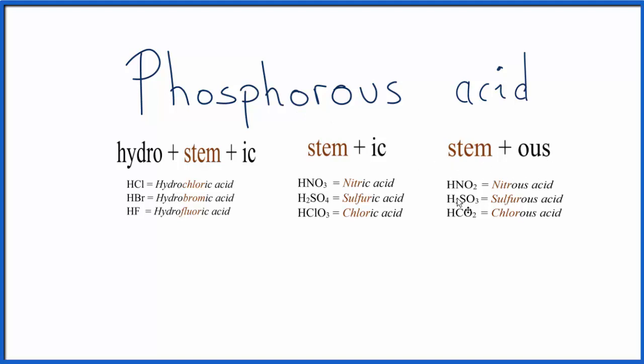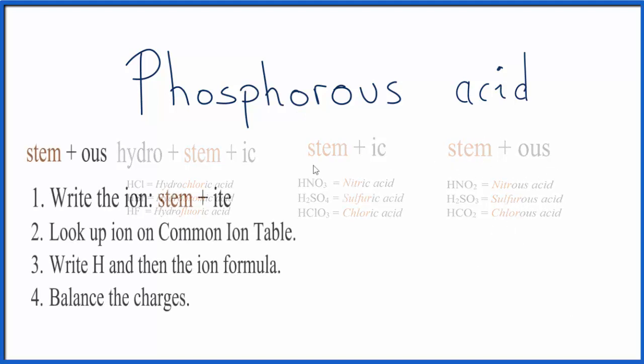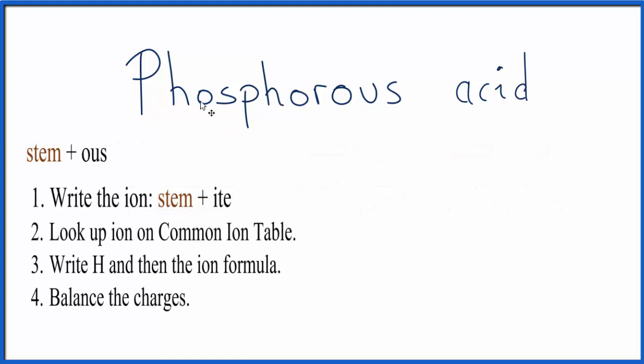So we're going to use rules for this type of acid to write the formula. We'll write the stem, that's right up to the ous, and then we're going to change the ous to ite.